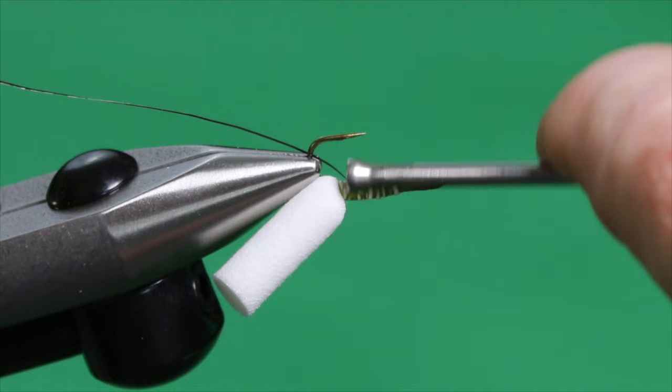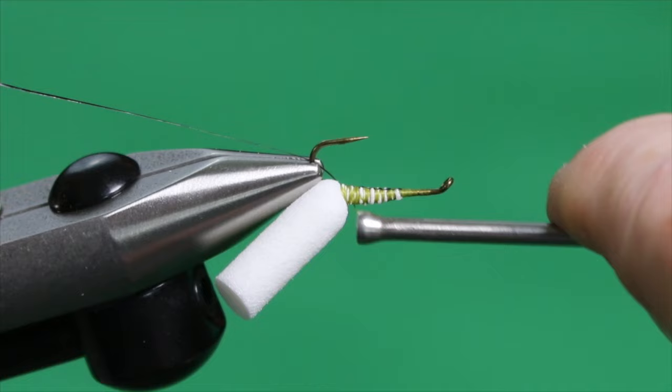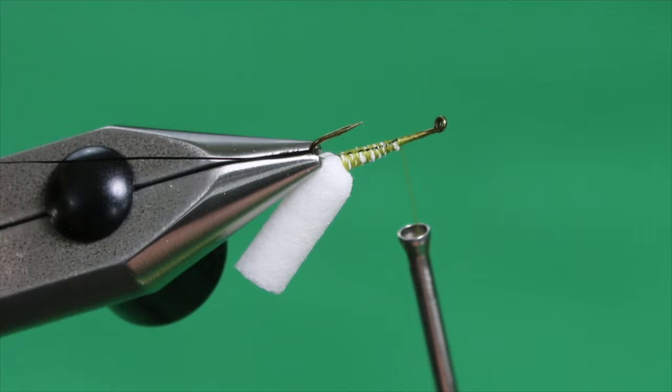And to avoid hitting the hook point, I'm just going to take the barrel of the bobbin and roll it around the shank like so. That'll keep it out of the way. And I want to make sure that that's right down the middle of the hook. So when I pull it over the back, it's going to be right down the middle of the shell back too.